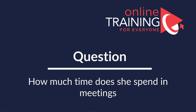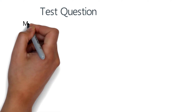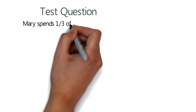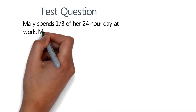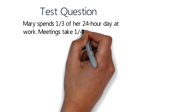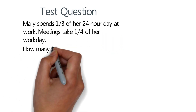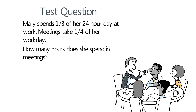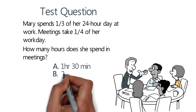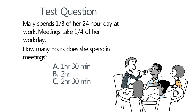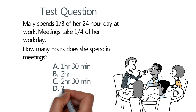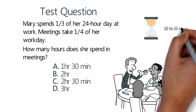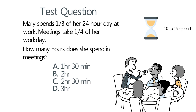Here is an interesting question which tests how well you plan your day-to-day work. Mary spends one-third of her 24-hour day at work. Meetings take one-fourth of her workday. How many hours does she spend in meetings? You have four choices: A) one hour and 30 minutes, B) two hours, C) two hours and 30 minutes, and D) three hours. Give yourself 10 to 15 seconds.